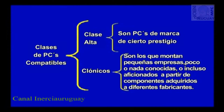Dentro de los PCs compatibles se han establecido dos grandes clases: A. Los auténticamente compatibles o de clase alta, y B. Los clónicos o de clase baja. Los primeros son los PCs de marca de cierto prestigio. Los segundos, o clónicos, son los que montan pequeñas empresas de marcas poco o nada conocidas, e incluso aficionados, a partir de componentes adquiridos de forma individual a diferentes fabricantes de componentes.